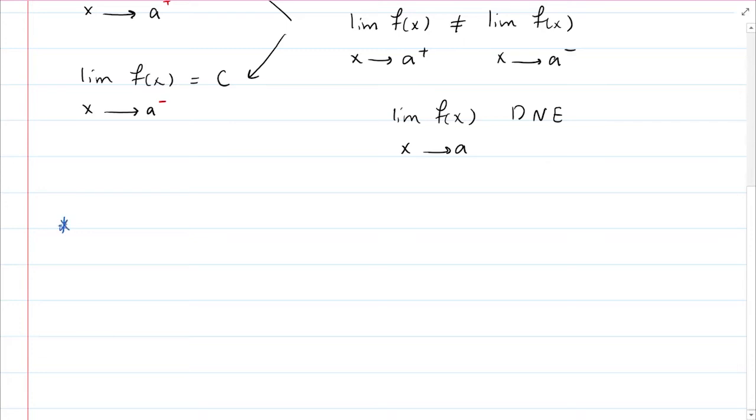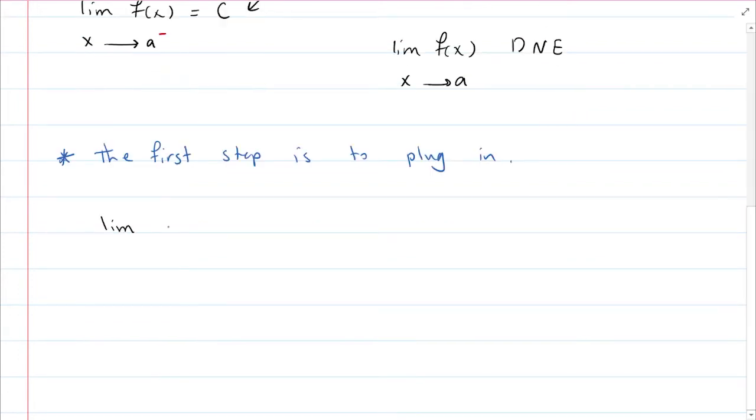So the first step, the first step to find the limit is to plug in. So always substitute the number first. That means if I give you what is the limit of 1 plus sine x divided by cosine x as x approaches 0. Well, the first thing you should do is to substitute this number right in here, right in here and in here. Depending on the answer that you will get, you will decide what to do next. So if I substitute this number, I get 1 plus sine of 0 and cosine of 0, which gives me 1 plus 0 over 1. That means the answer is equal to 1.